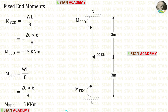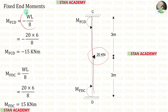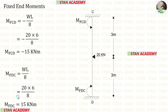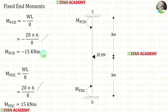Now let us find the fixed end moments in column CD. There is a point load of 20 kilonewton acting at the center. The formulas are minus W·L / 8 and plus W·L / 8. Applying W = 20 and L = 6, we obtain M_CD and M_DC.